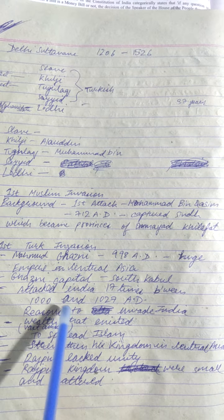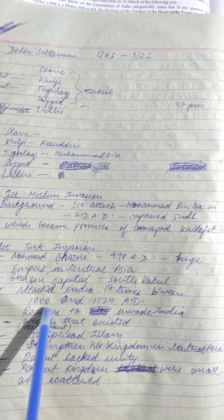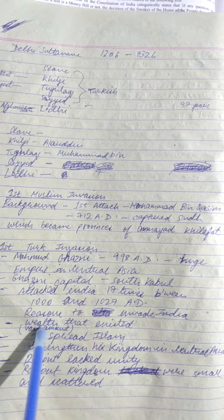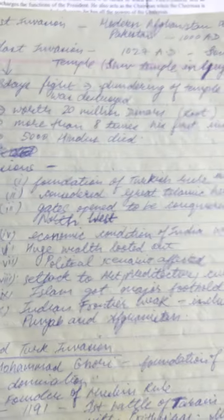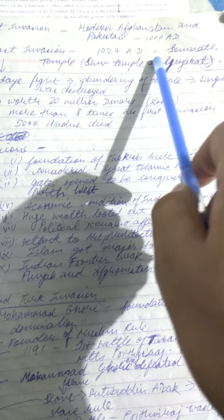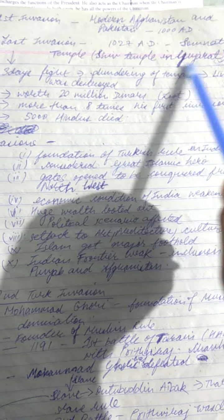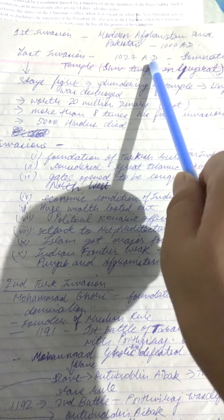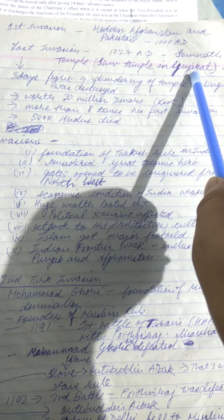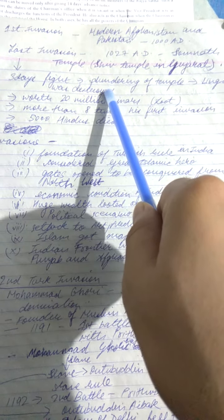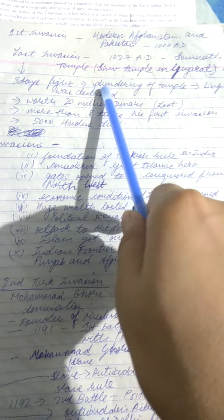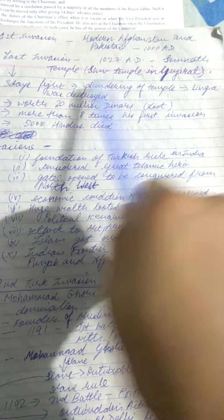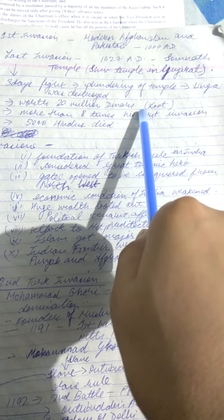He invaded 17 times between 1000 and 1027 AD and acquired vast wealth. The first invasion was in 1000 AD and the last invasion was in 1027 AD on the Somnath temple, a Shiv temple in Gujarat. It was a three-day fight. He plundered the temple, destroyed the Shivling, and looted wealth worth 20 million dinars.